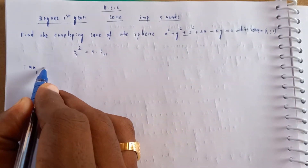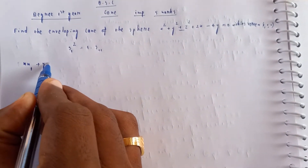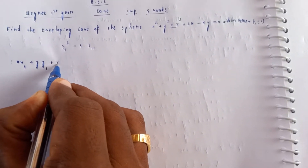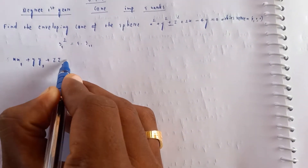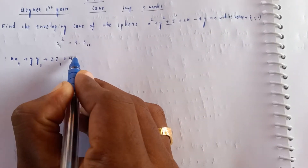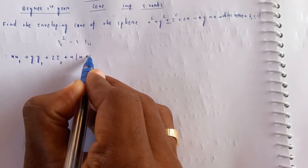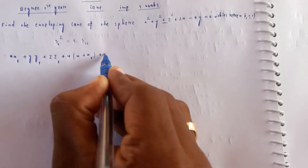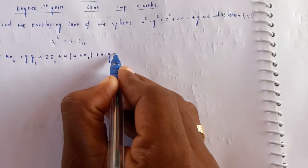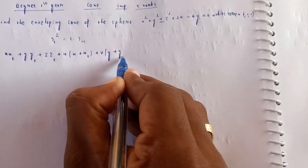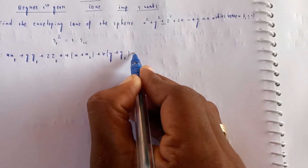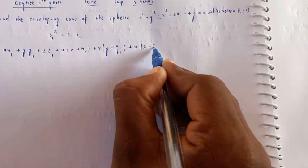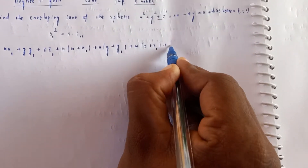The formula for T is: xx₁ + yy₁ + zz₁ + u(x + x₁) + v(y + y₁) + w(z + z₁) + d.